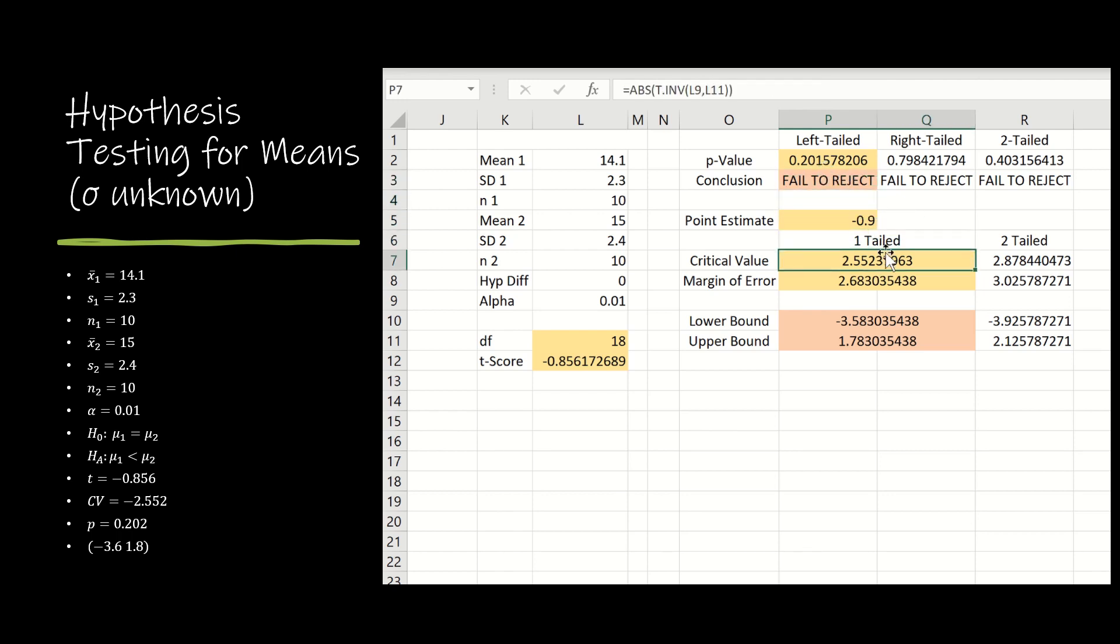The critical value, I'm just going to use that absolute value to make sure that it ends up as a positive critical value. So I'm doing t-inverse of l9, l11, l9 is alpha, and then l11 is degrees of freedom. The margin of error, that's that crazy formula. So if you got it right here, just come up to the formula box and copy and paste it. It makes it a lot easier. The lower bound, the center of our interval is always the point estimate, so that would be here at p5. And then we're subtracting and adding the margin of error, which is p8. So those two match the values that we found by hand, negative 3.6, positive 1.8.